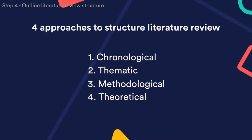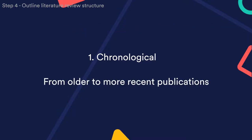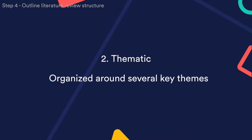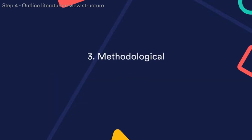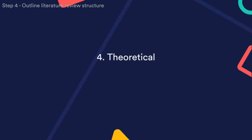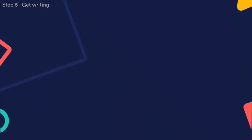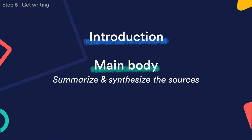Also look for themes, debates, contradictions, influential studies, and gaps. Step four: outline your literature review structure. You can approach it in a few ways depending on what you found in the literature and what you want to emphasize. Here are four common approaches: chronological (from older to more recent publications), thematic (organized around several key themes), methodological (comparing different research methods used across studies), and theoretical (discussing opposing theories or models). Finally, make sure your literature review has an introduction, a main body that summarizes and synthesizes the sources, and a conclusion.